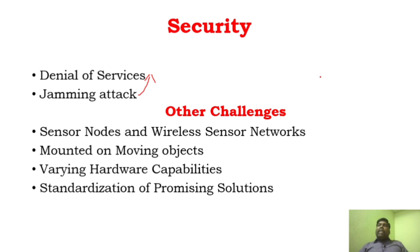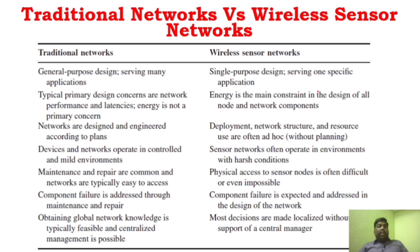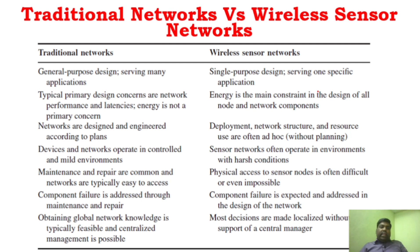These are the other challenges. Right now, if you take computer networks, you have standardized solutions for all the problems. But for WSN, standardization is still emerging. We have to provide standardization for WSN to solve all these problems. Today what we have seen is the challenges of WSN, which is a very important topic. Apart from these challenges, you should also know about the difference between traditional networks and wireless sensor networks.